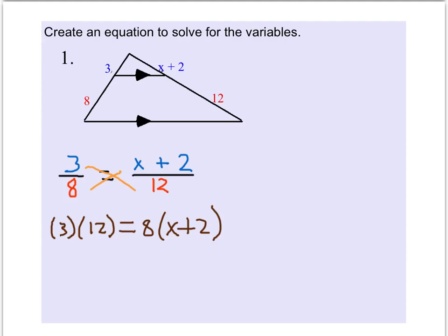3 times 12 is 36 and then 8 times the quantity x plus 2. Make sure we use the distributive property. And now we'll subtract 96 from both sides of the equation. Wait a minute, 96? That's incorrect.